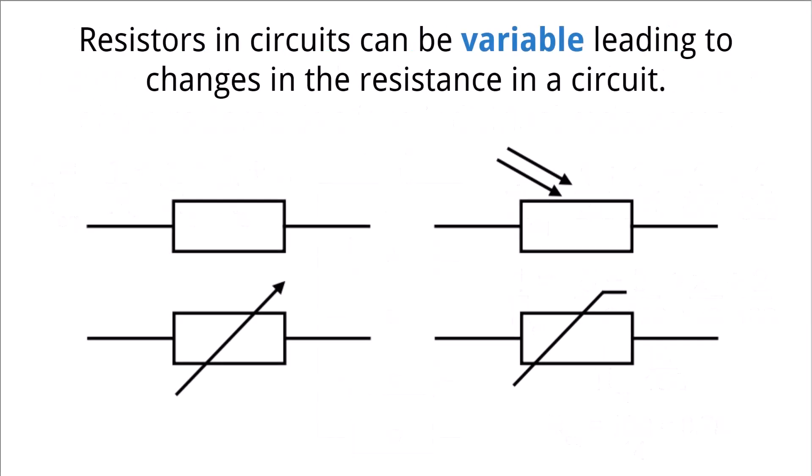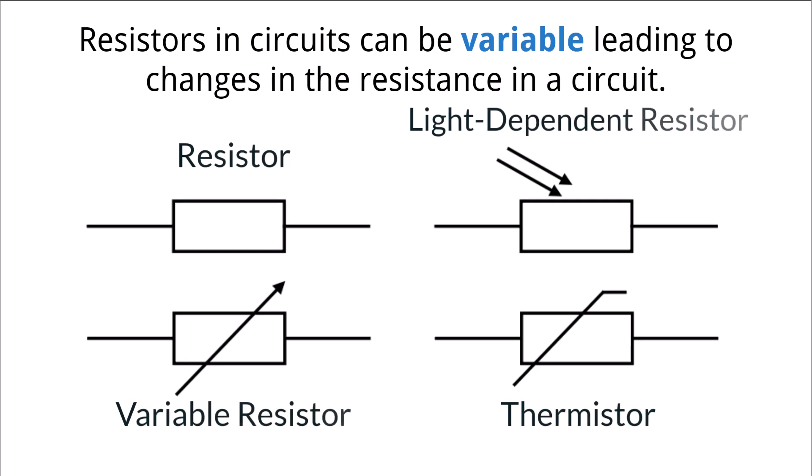Not all resistors are static in their resistance. Variable resistors can have their resistance changed either by changing the dimensions of the resistor or the materials it is made from. Some variable resistors like thermistors are temperature dependent — as the temperature of the resistor increases, the resistance in the circuit decreases, because the heated material allows more electrons to become available as charge carriers. Another type of variable resistor is a light-dependent resistor. The energy gained from photons of light striking the material makes a greater number of electrons free to carry a charge, thus decreasing the resistance of the material.